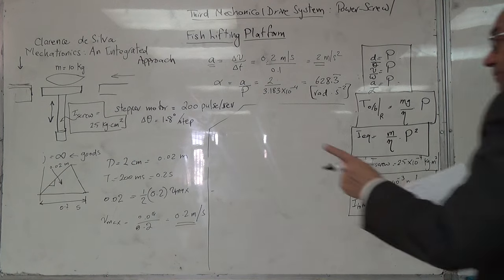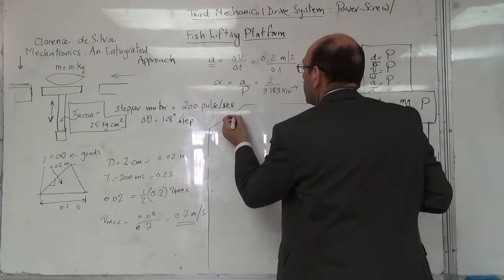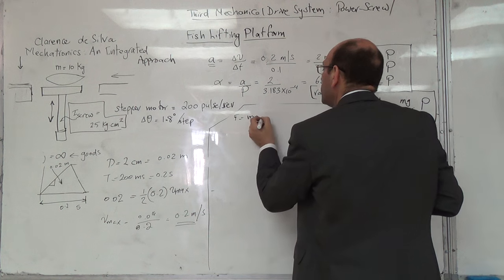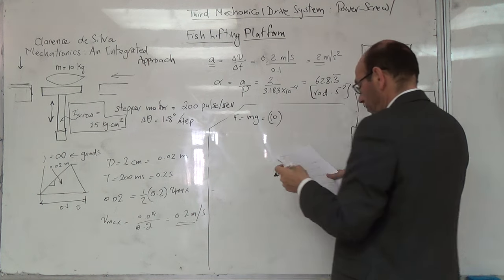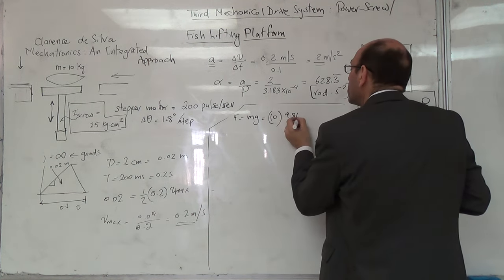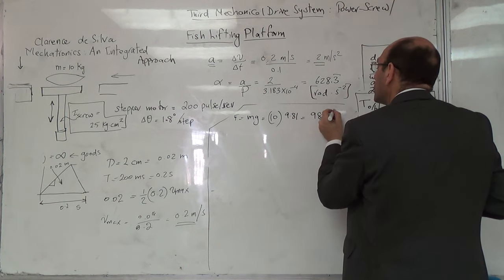Now, the torque equivalent will be less than 10 kilos. So here F equals M by G. It equals 10, it equals 9.81, it equals 98.1 newton.